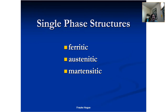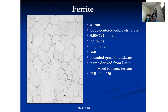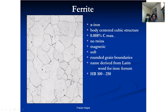Ferrite — the parent phase ferrite is alpha iron, so it's BCC. Alpha refers to the primary phase, typically the one stable at room temperature. It's a BCC structure, we don't see any twins in this microstructure, it's magnetic, and it's typically soft. We see rounded grain boundaries — not jagged — and a nice triple point. The name derives from the Latin word for iron, 'ferrum.' It has a Brinell hardness value from 100 to 250.